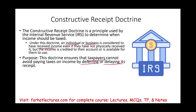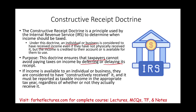The more you can delay paying taxes, the better off you are. So if income is available to an individual or a business, they are considered to have constructively received it, and it must be reported as taxable income in the appropriate tax year, regardless of whether they actually received it or not. For example, let's assume you received a check in the mail on December 31st but did not pick it up until January 15th because you went on vacation. You did receive it — you had access to it December 31st, you just chose not to get it. It's income to you for that year.